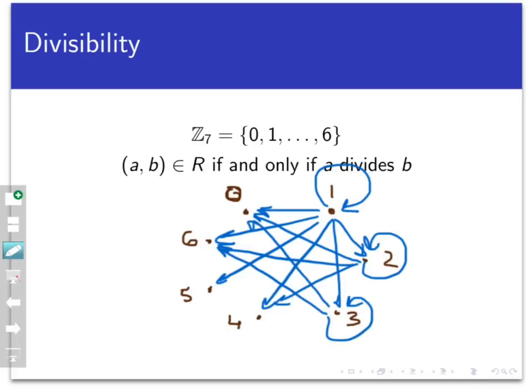The number 4 divides only 0 and itself, and the same is true for 5 and 6, so all we will do is draw loops and also an edge from those numbers back to 0. And that is the complete directed graph.